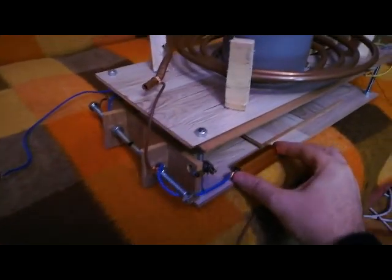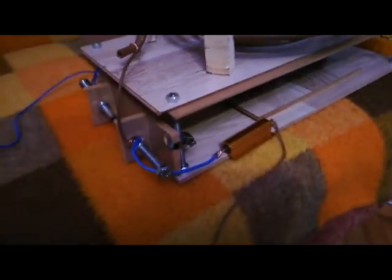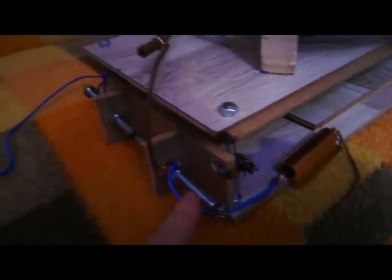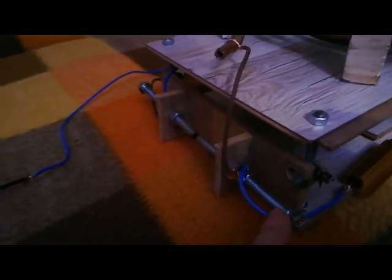From here we have two wires. One goes to a 100 watt, one kiloohm or 1000 ohm resistor. The other wire goes to another 100 watt, one kiloohm resistor. From those resistors we have two input wires to one side of the spark gap and to the other side of the spark gap.